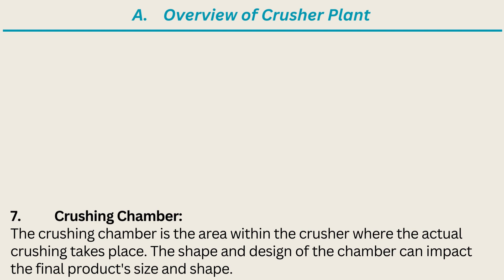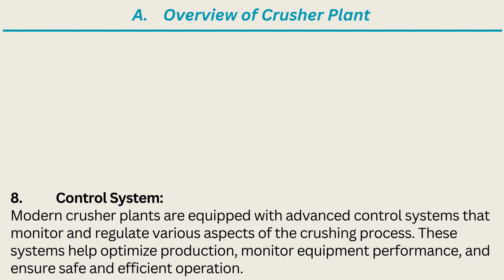7. Crushing Chamber. The crushing chamber is the area within the crusher where the actual crushing takes place. The shape and design of the chamber can impact the final product's size and shape. 8. Control System. Modern crusher plants are equipped with advanced control systems that monitor and regulate various aspects of the crushing process. These systems help optimize production, monitor equipment performance, and ensure safe and efficient operation.